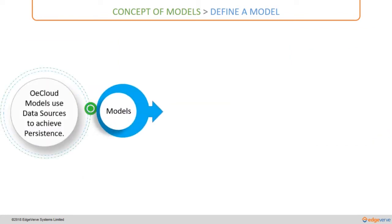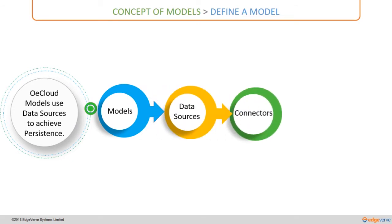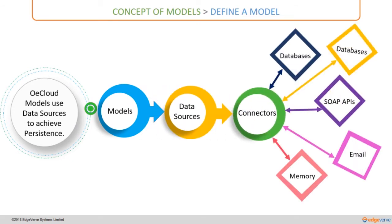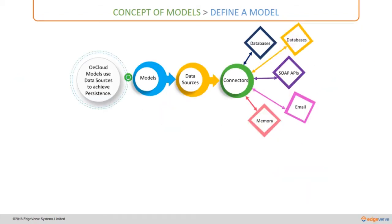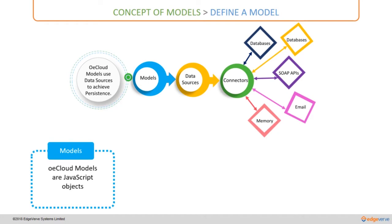This diagram provides a view of how models and data sources work. An OECloud model is a JavaScript object which has both Node and REST APIs. The models are connected to backend systems via data sources, so you use the model API to interact with the data source to which it is attached. Additionally, you can add functionality such as validation rules and business logic to the models.